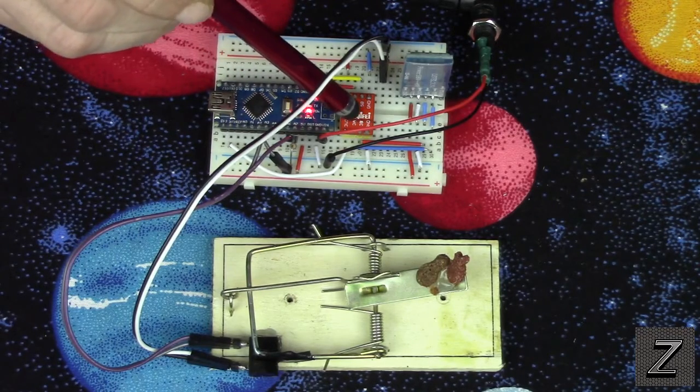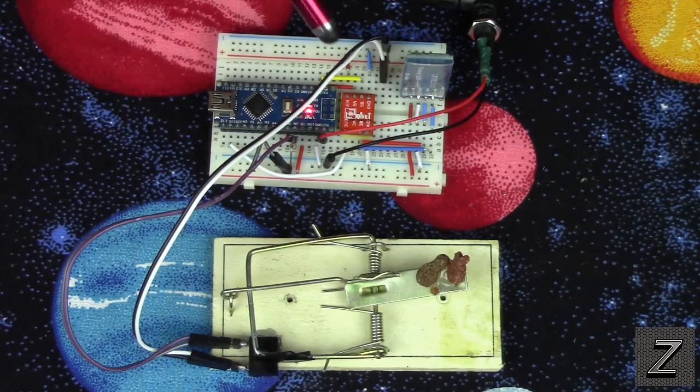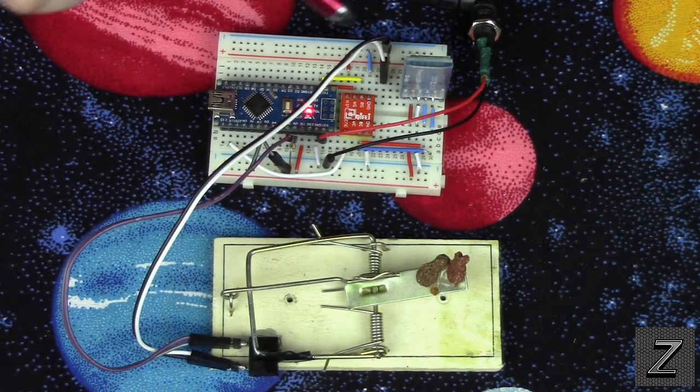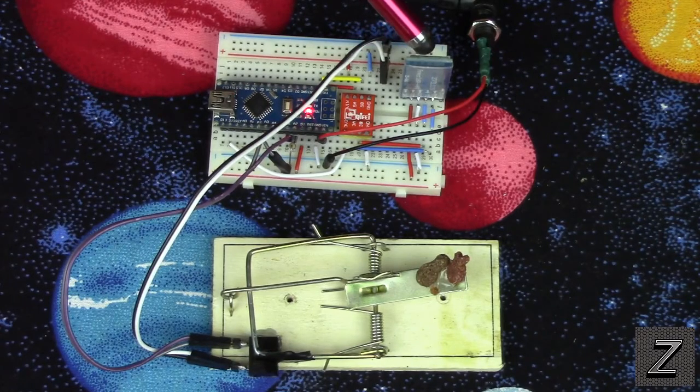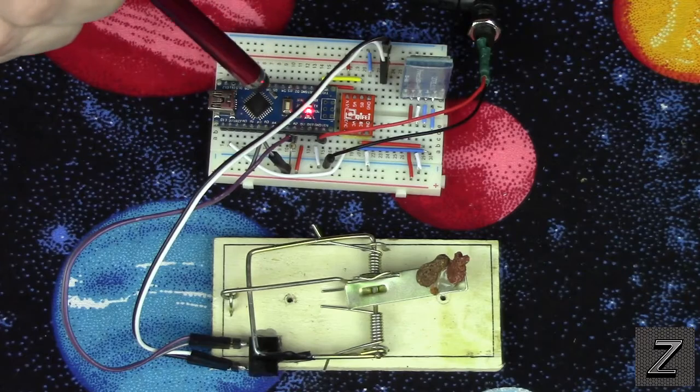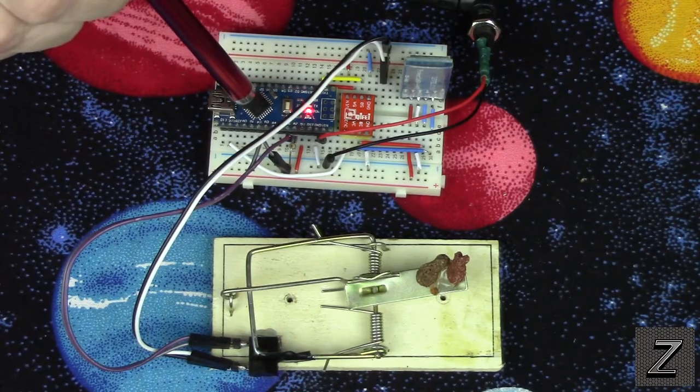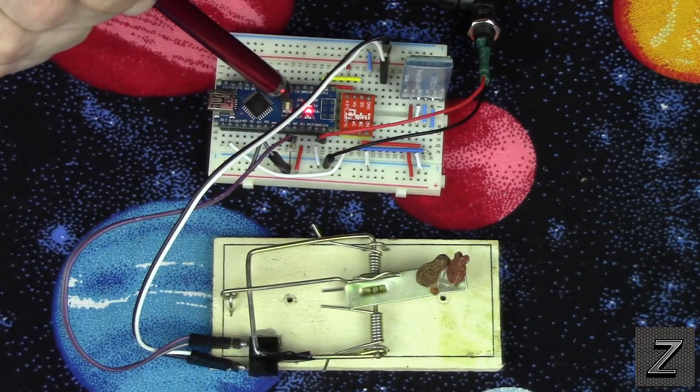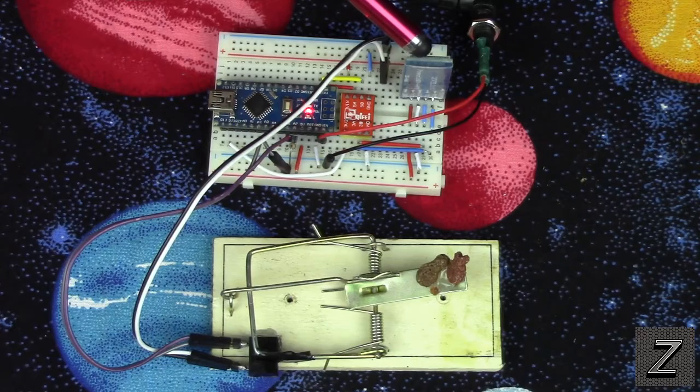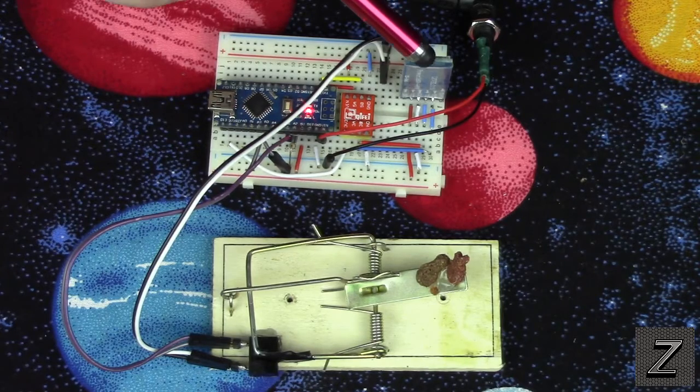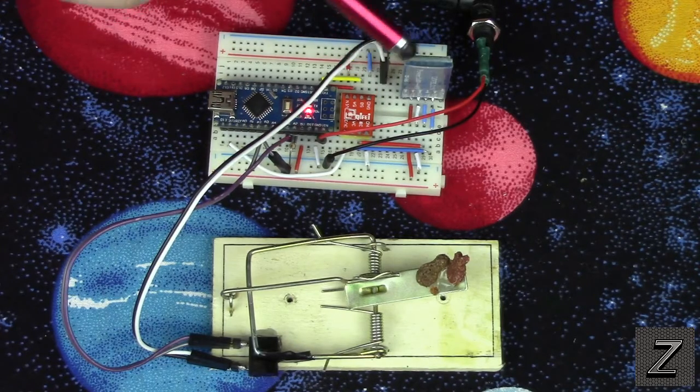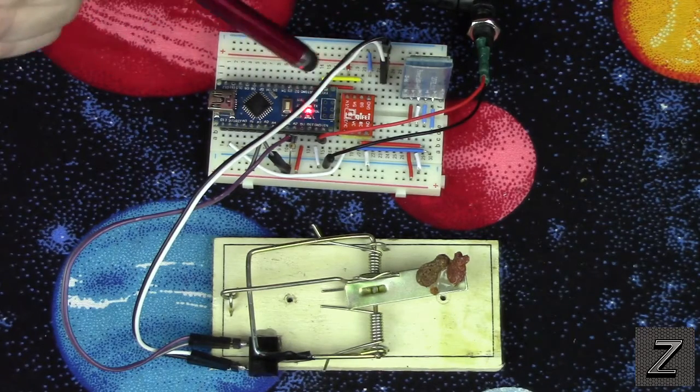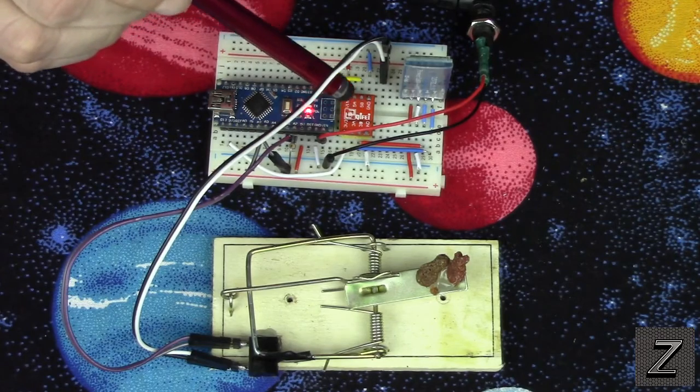Then we have a logic level converter, and that's connected between the Arduino and the Bluetooth module, the HC-06, because the HC-06 works on 3.3 logic, and the Arduino board works on 5-volt logic. So, what this does is it converts everything going out to the HC-06 is being knocked down to 3 volts, and then everything coming from that board to the Arduino is being increased to 5 volts.